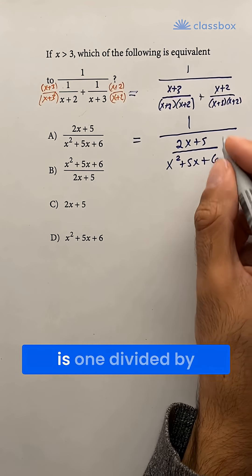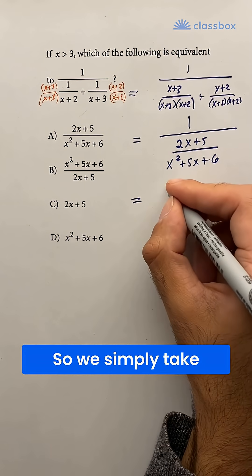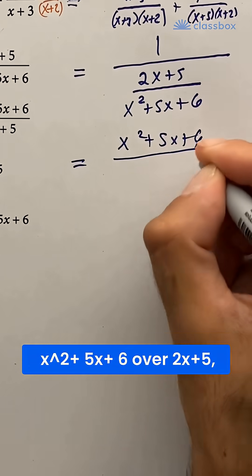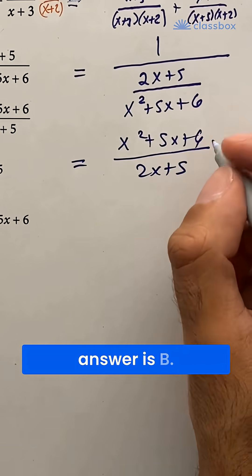And now what we want is 1 divided by this expression. So we simply take the reciprocal. That gives us x squared plus 5x plus 6 over 2x plus 5. And the correct answer is B.